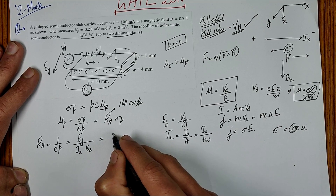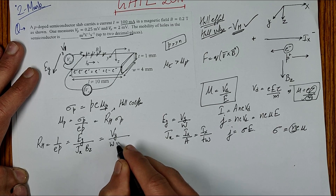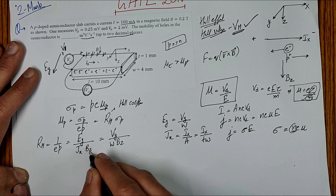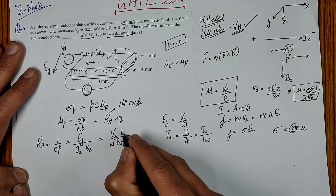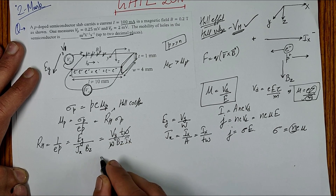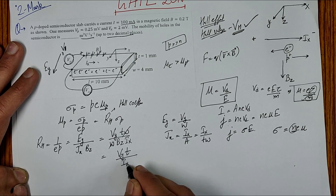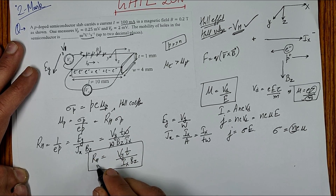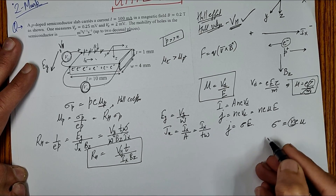Substituting into the RH formula: RH = (Vy/w) / ((Ix/(t·w)) · Bz). The w cancels, giving RH = Vy · t / (Ix · Bz). This is the Hall coefficient.